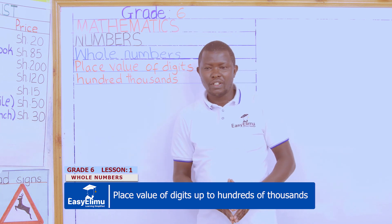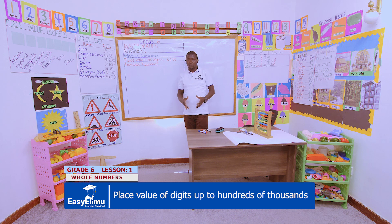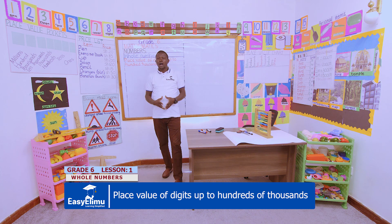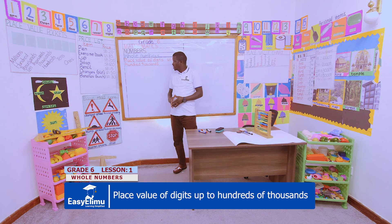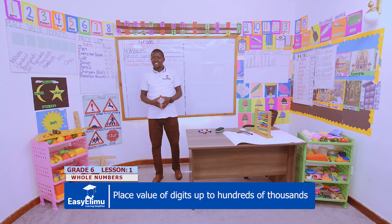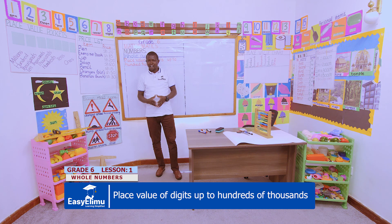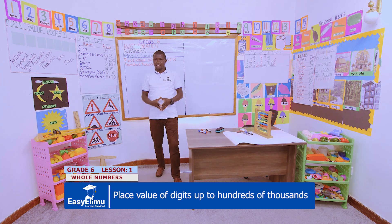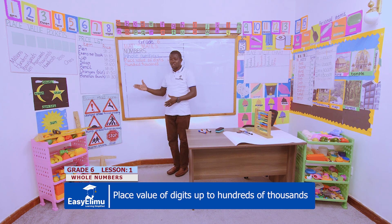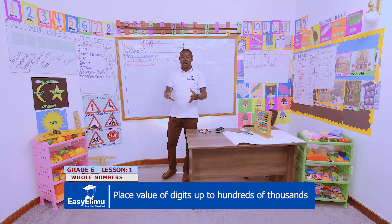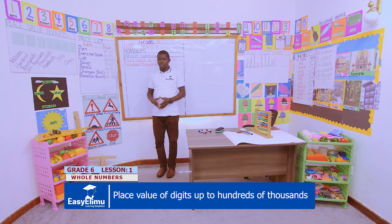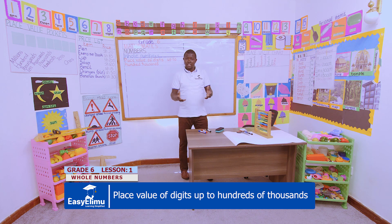Today we'll be looking at numbers — specifically whole numbers — and we'll be looking at the place value of digits up to hundred thousands. While you were in grade 5, you learned the place value of digits, but today we focus on place value up to hundreds of thousands. I welcome you to grade 6, and today I'd like us to focus on the following — just a recap of what you learned in grade 5.